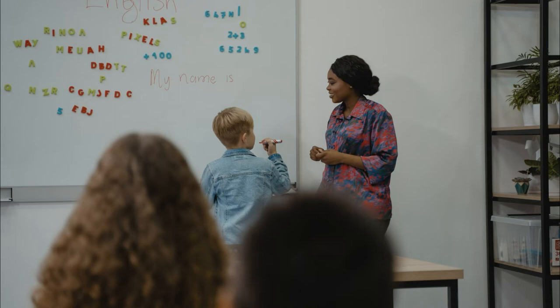Set students up in groups of two to four with a set of cards each. They put all the cards face down and take turns picking up a picture card, saying what it is, and then pick up a vocabulary card. If they are a match they keep the pair; if not they replace the cards face down and the next student continues.